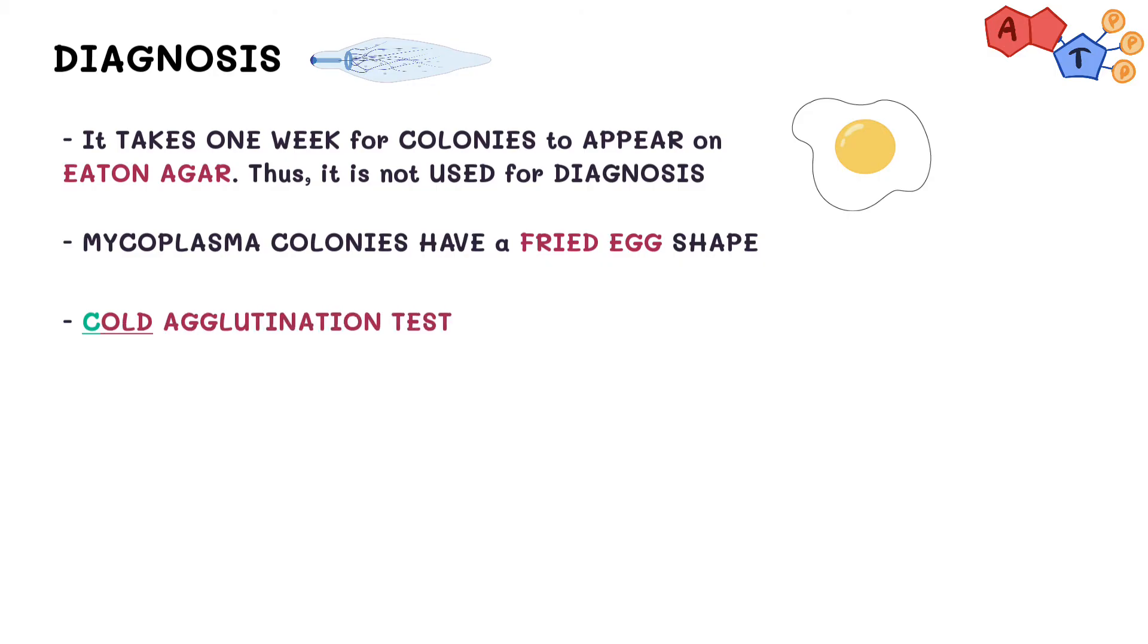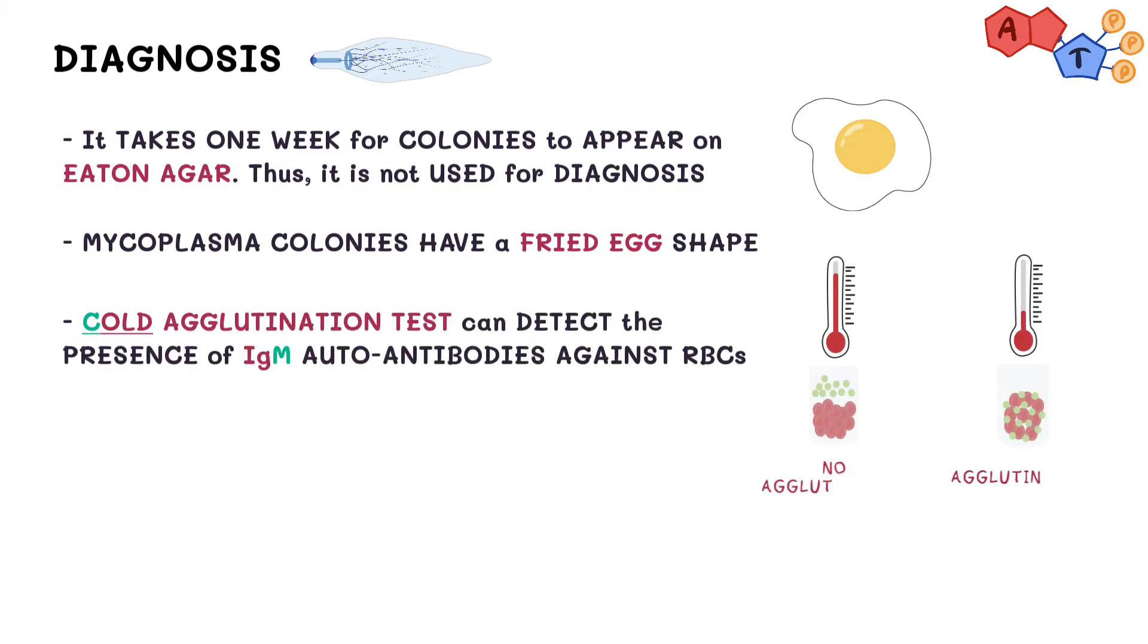Cold agglutinin is another fast serological test that can detect the presence of IgM autoantibodies against RBCs in the patient's serum. However, only half of patients with mycoplasma pneumoniae will be positive for cold agglutinins. Thus, the test is nonspecific and false positive results can even occur.